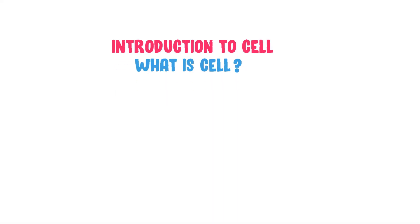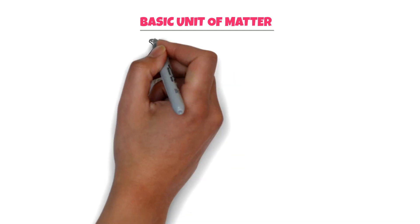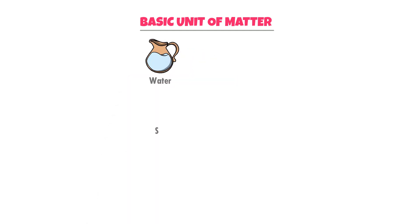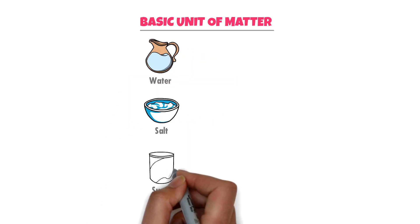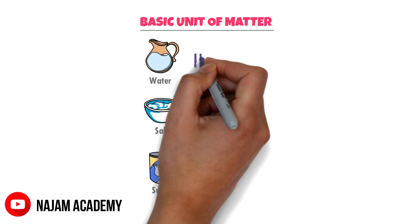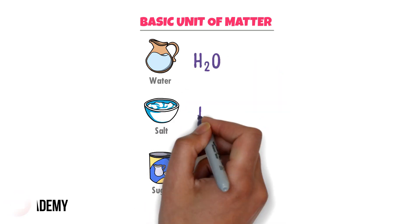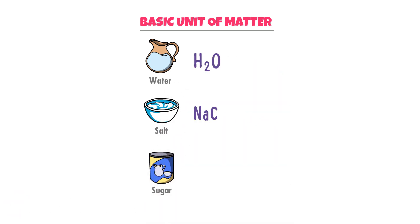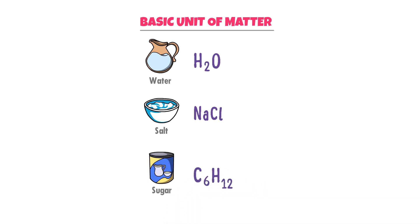Now let me teach you the easy concept of basic unit of matter. Consider water, salt, and sugar. We know that water forms from H2O molecules, salt forms from NaCl, and sugar forms from C6H12O6.